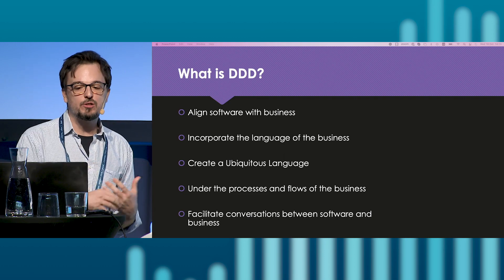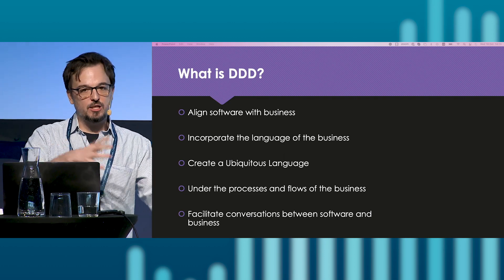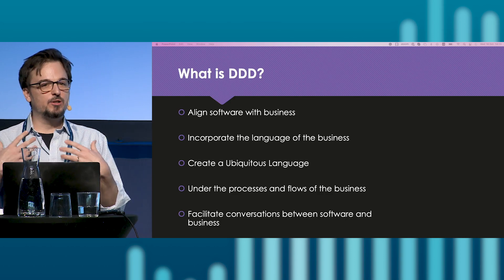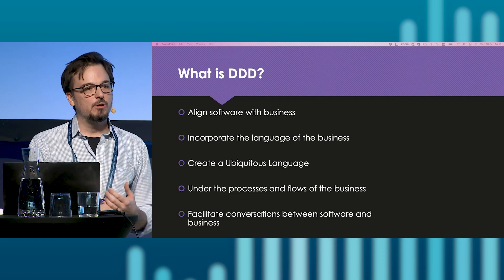How do you structure this conversation with stakeholders and how do you drive those conversations? Different teams are doing this without any particular methodology, but something we can tap into is domain-driven design. It's a very well-established methodology for having conversations with the business, understanding user flows and processes, and modeling them in our software. The idea is to align the software with the business — understanding the language of the business and bringing that language into our software development process, so that when someone looks at the API, they can figure out what we are trying to do in every operation.